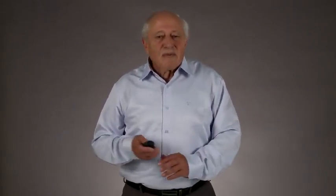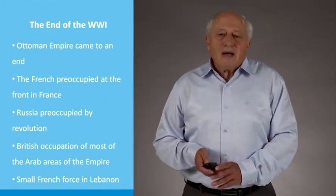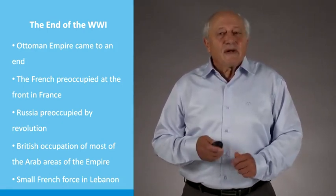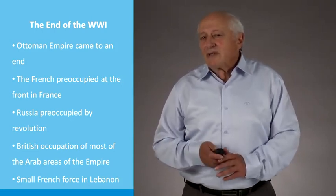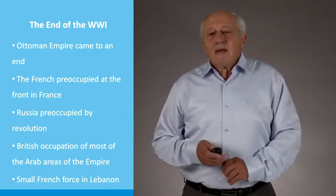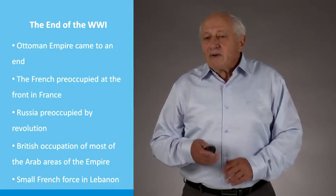Now we come to the question of how the war ended in the Middle East and what was the division of power between the various powers that took over what was in the past the Ottoman Empire. The British historian and journalist Elizabeth Monroe defined this post-war period as Britain's moment in the Middle East. Indeed, Britain was, after the First World War, by far the superior power in the Middle East. The Ottoman Empire had come to an end. The French, who were completely preoccupied at the front in France, could spare only token forces for the Middle East. Russia was completely preoccupied by revolution and her opting out of the war. So British occupation forces were in most of the Arab areas of the Empire.